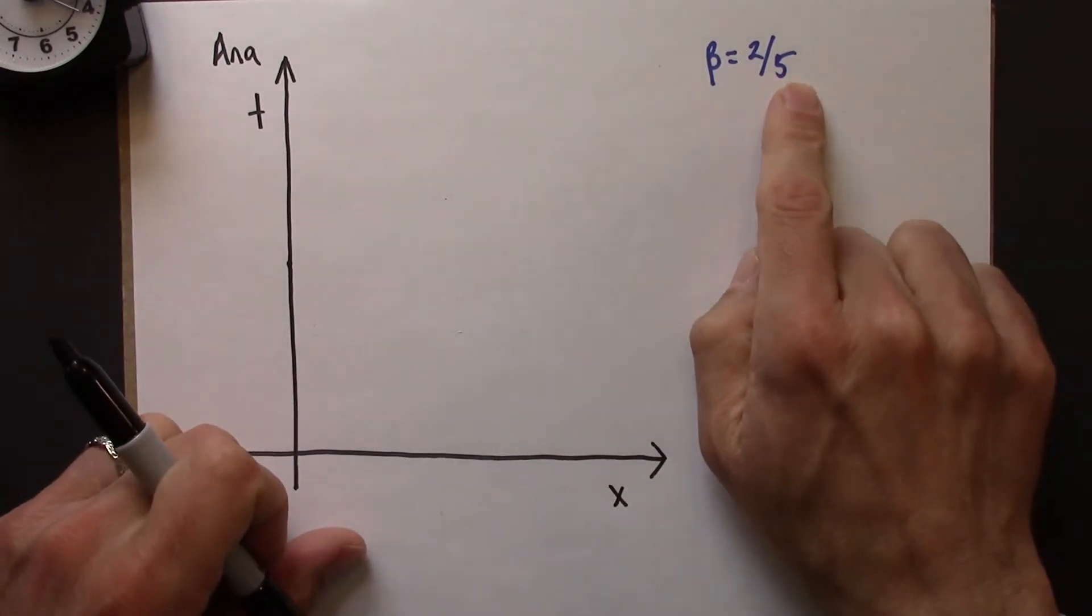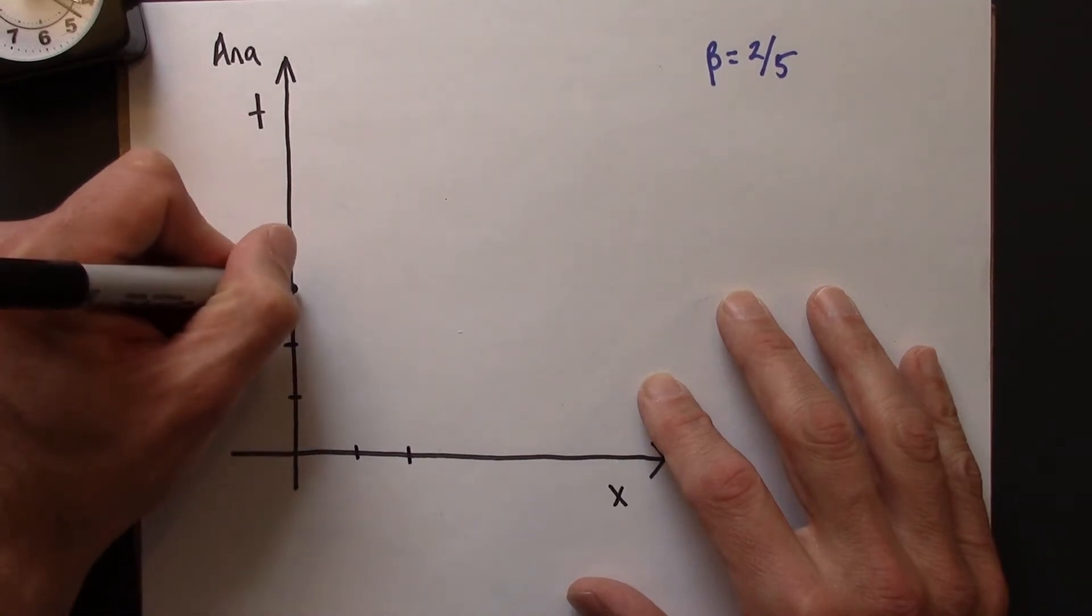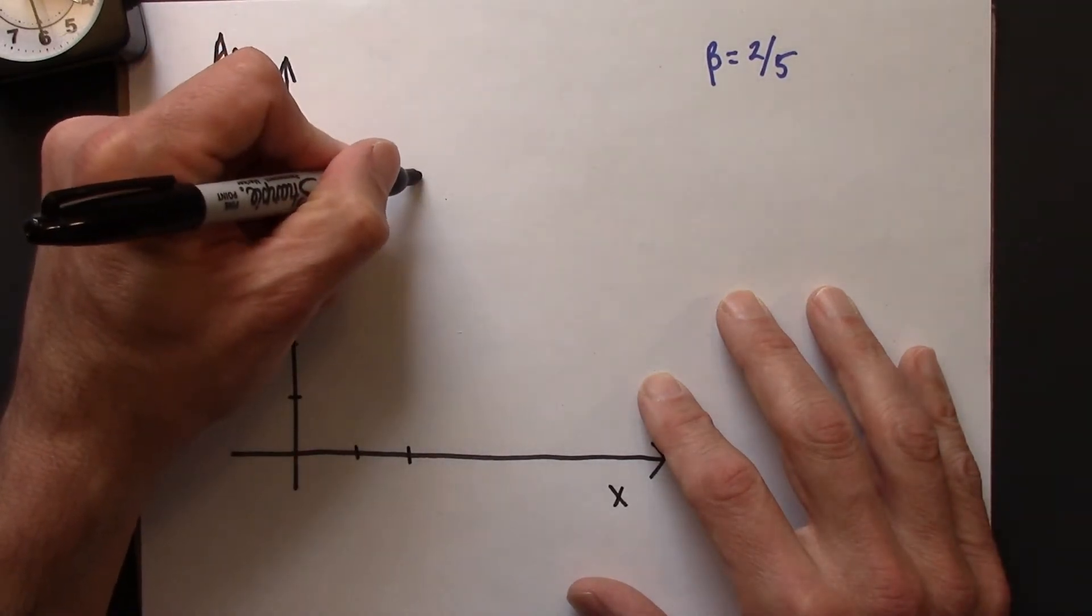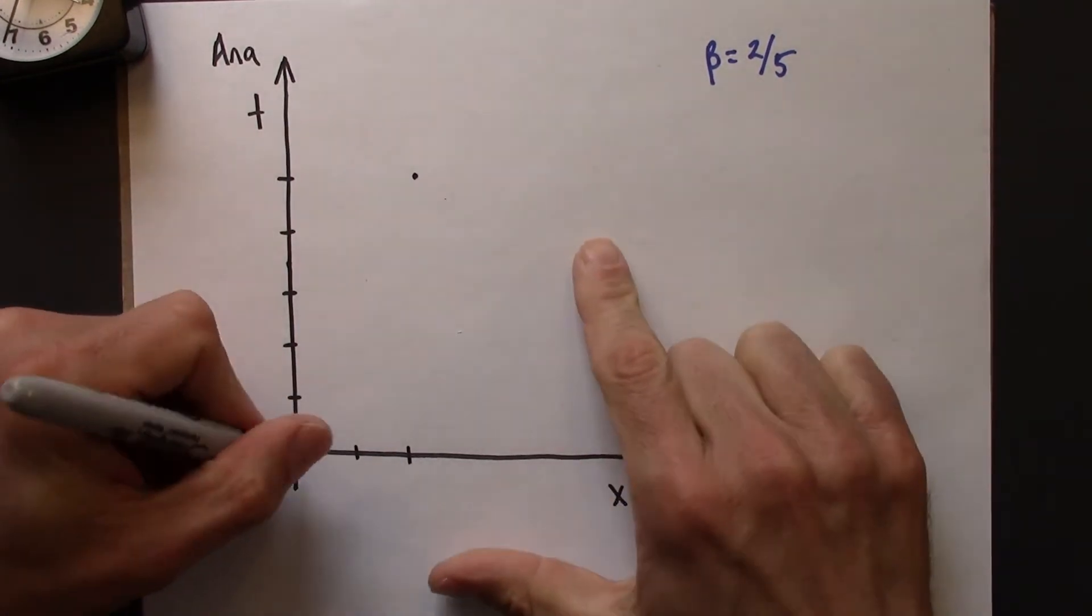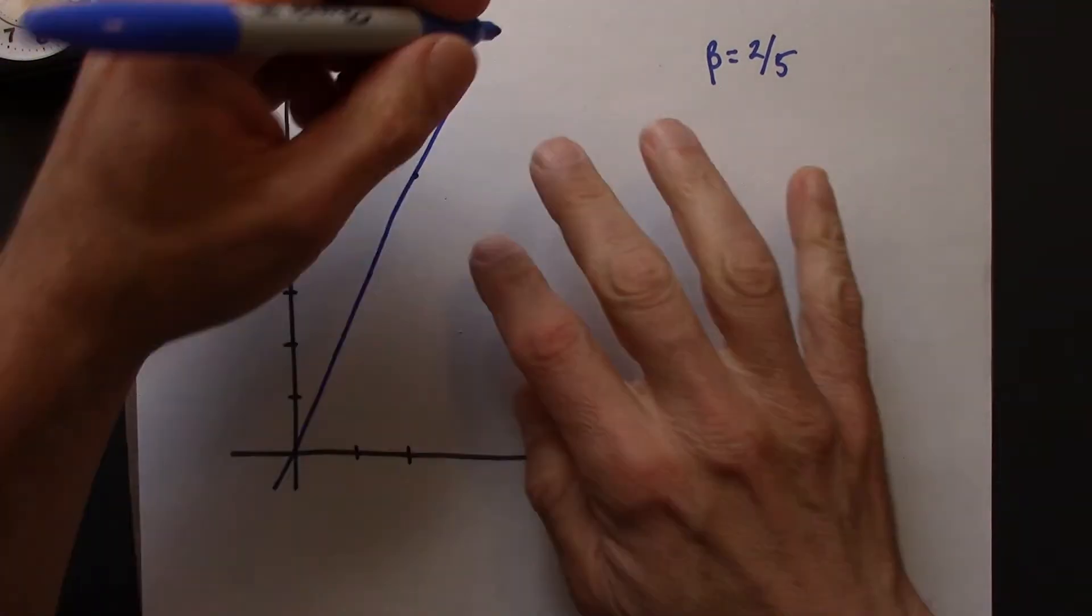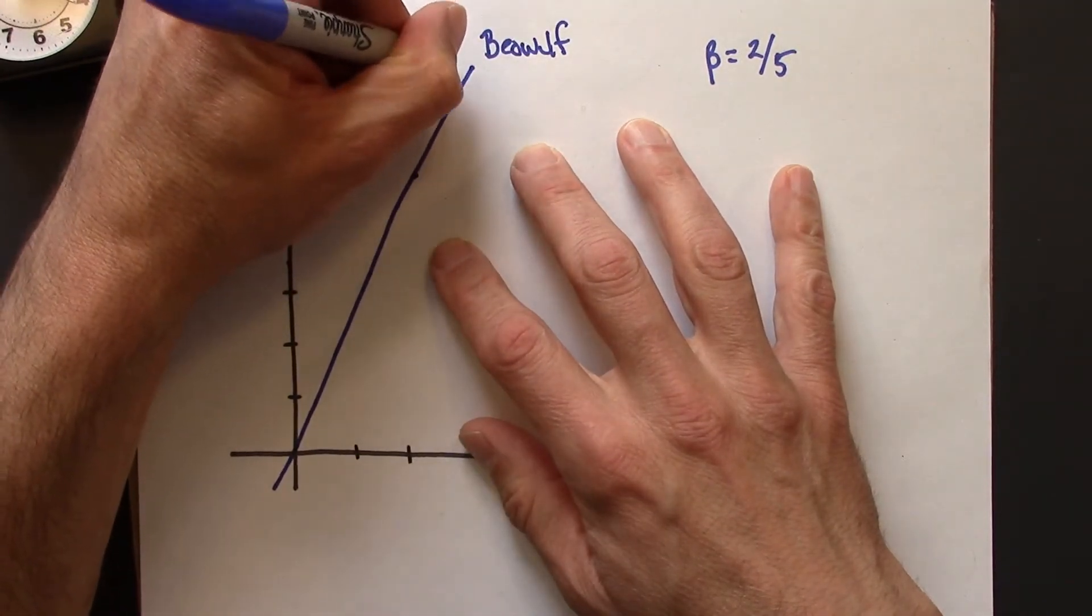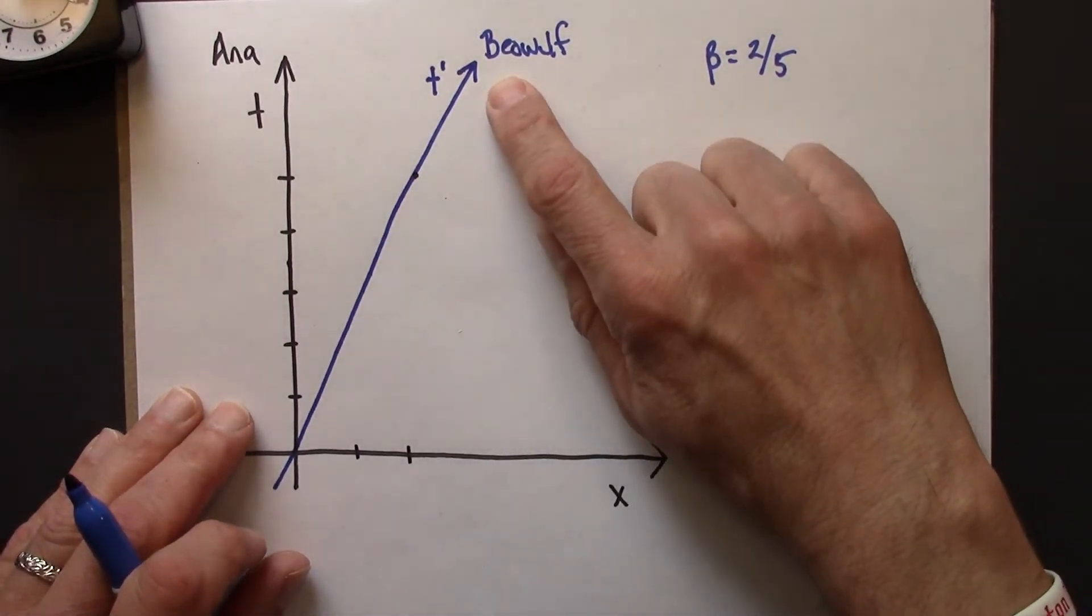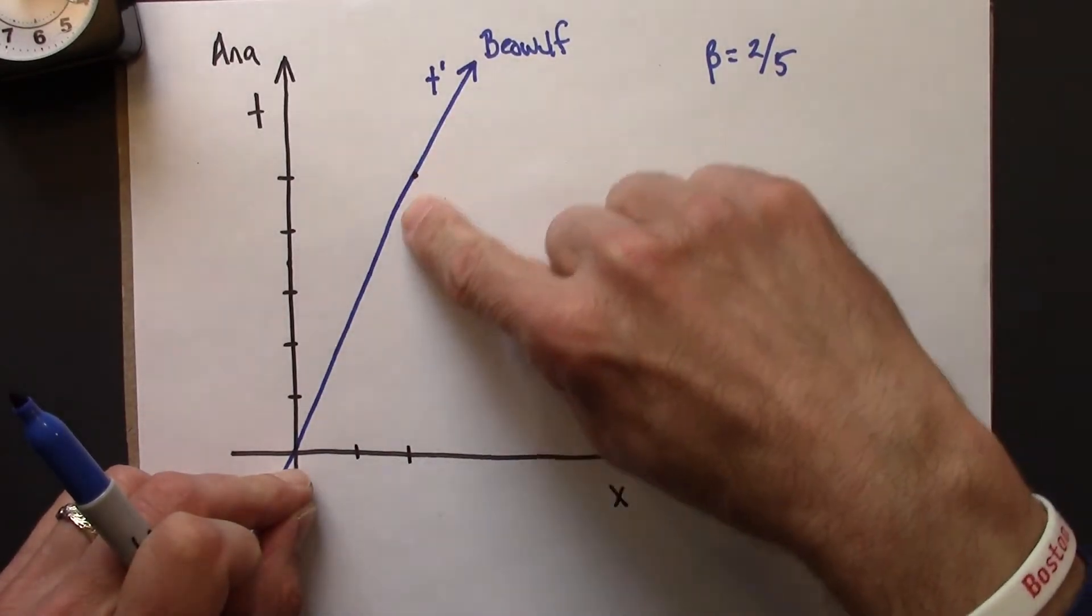So the clock is moving at 2 over 5. So that means it goes 2 units to the right, 2x units and 5 spatial units. So this is Beowulf's t prime axis. And that's just the world line of the clock that he's carrying with him at his origin. So now we need to think about how would we calibrate this axis.